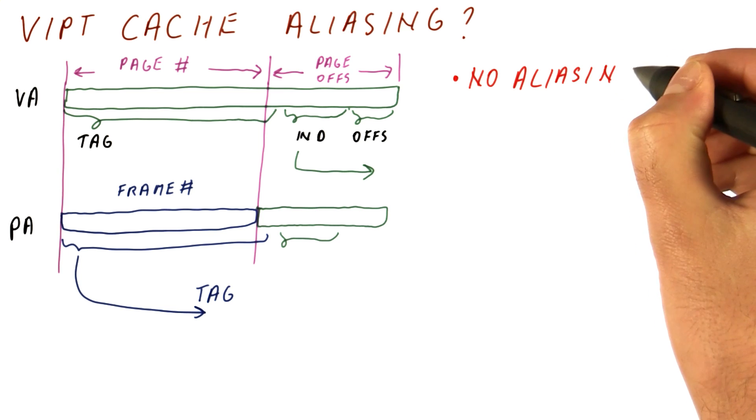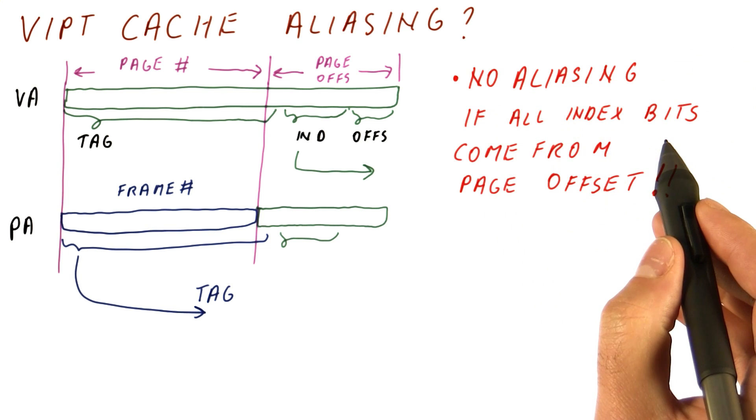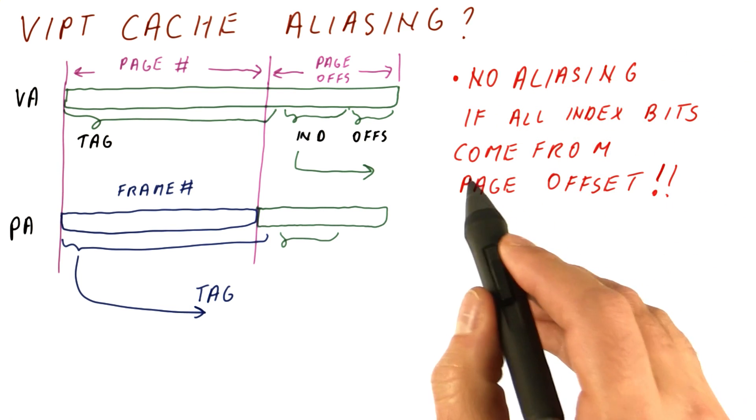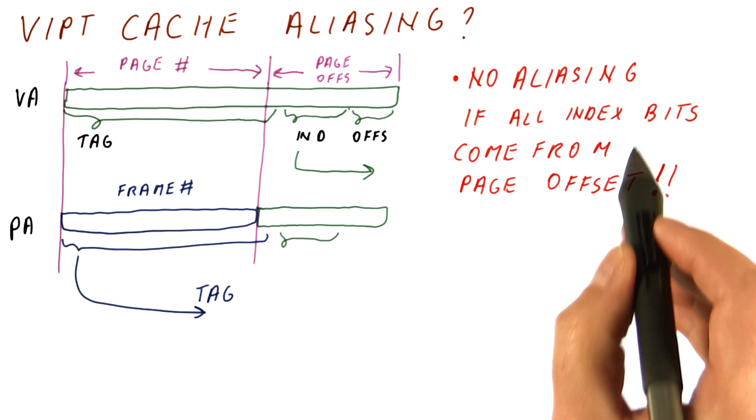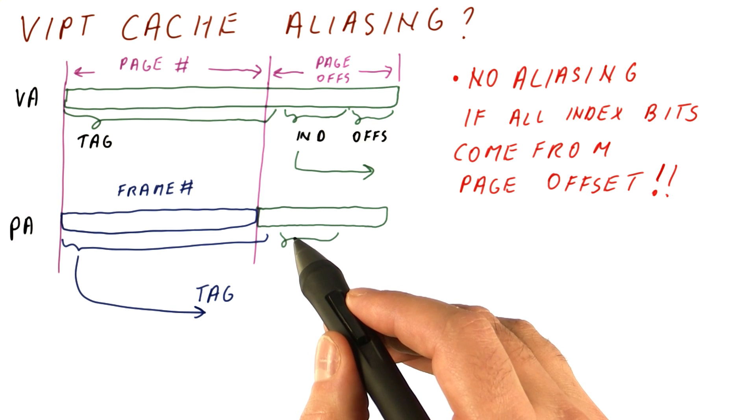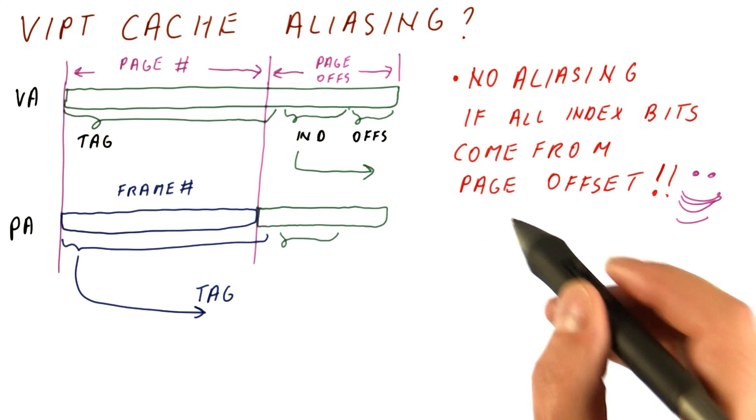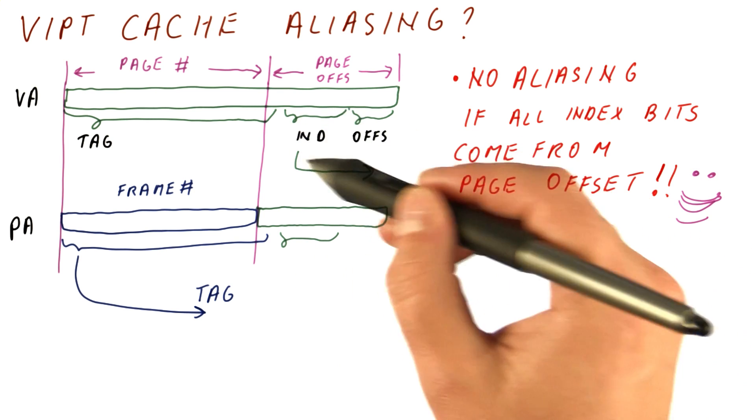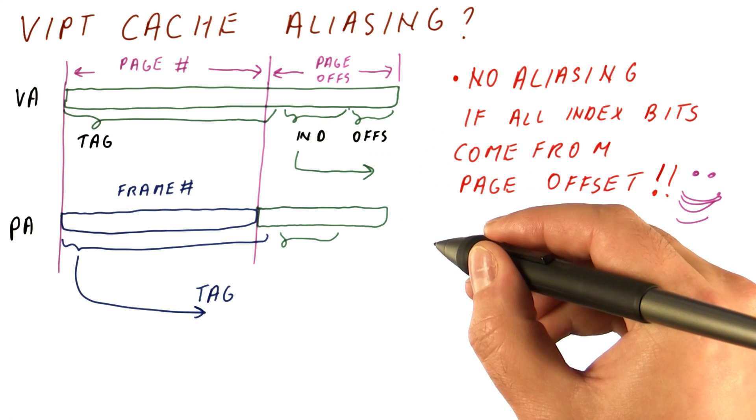So we have that there is no aliasing if all of the index bits that we use came from the page offset, because really those are the same index bits that would come from the physical address if we had the physical index cache. We like this very much, but the cache has to be small enough to do this. So for example,